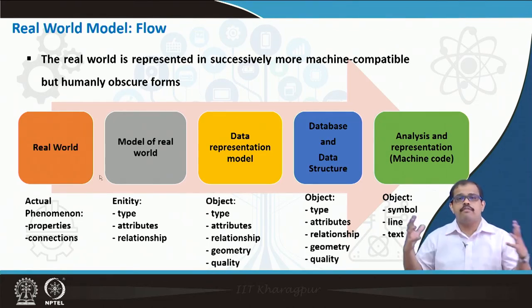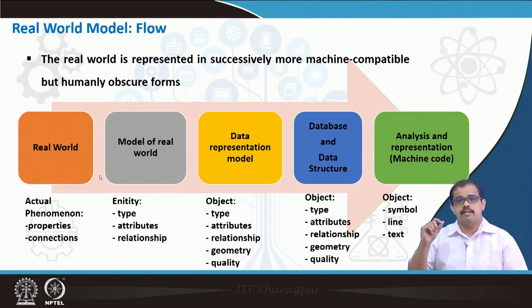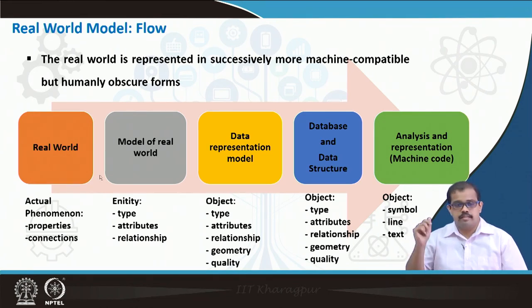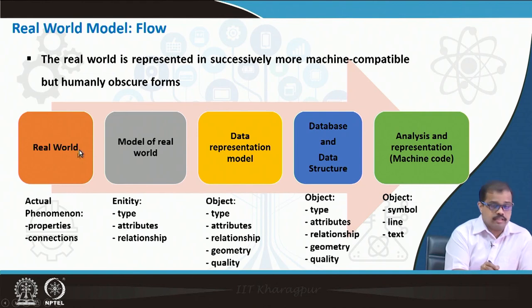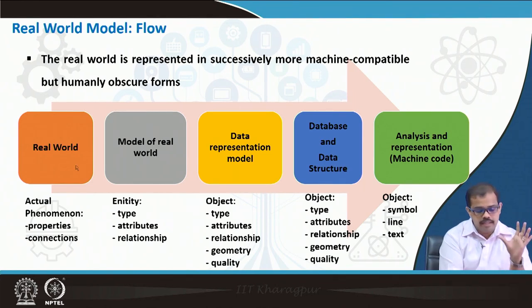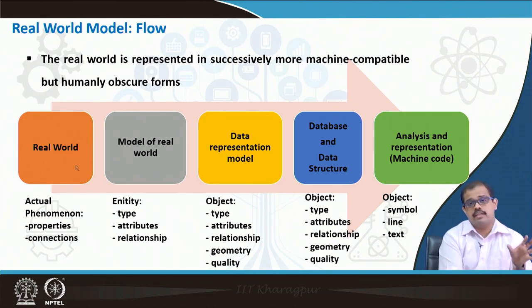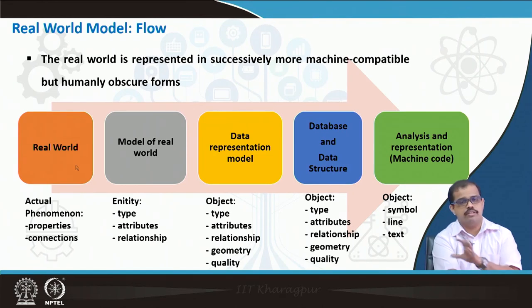When looking at the flow of a real world, I would like to give you some information about how the real world is translated into a database or data model. For example, when you look at the real world, you have actual phenomena such as a building, which may have connections — number of students visiting the building, number of professors having offices in the building, number of recording centers, number of parking areas, and number of trees around the building. These are certain connections that the real world will have.